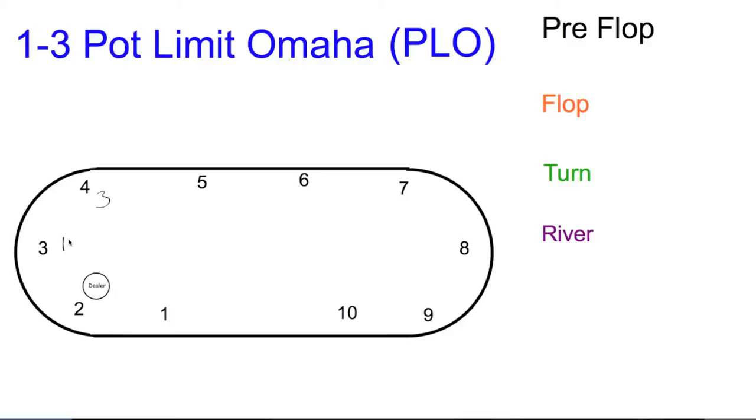We're playing 1-3, so here are the blinds. Small blind at seat 3, big blind at seat 4.